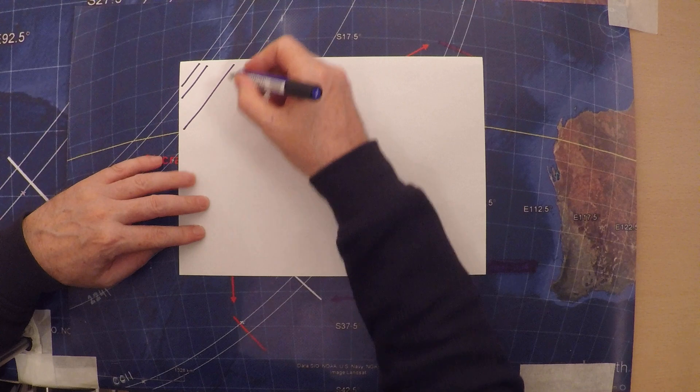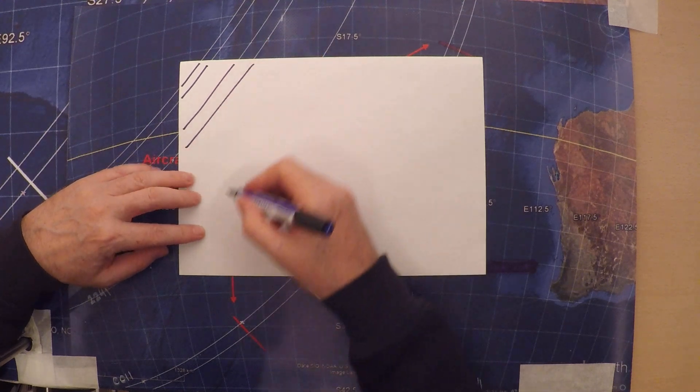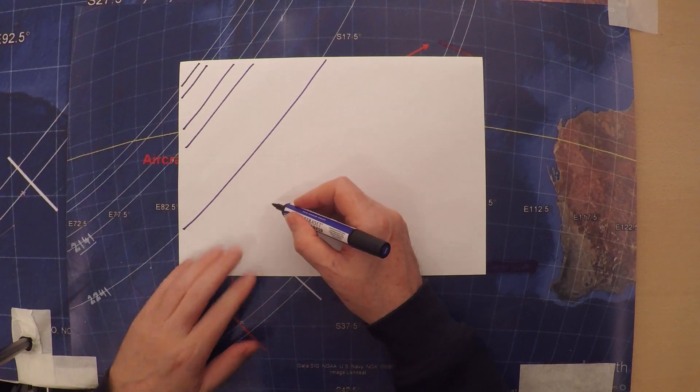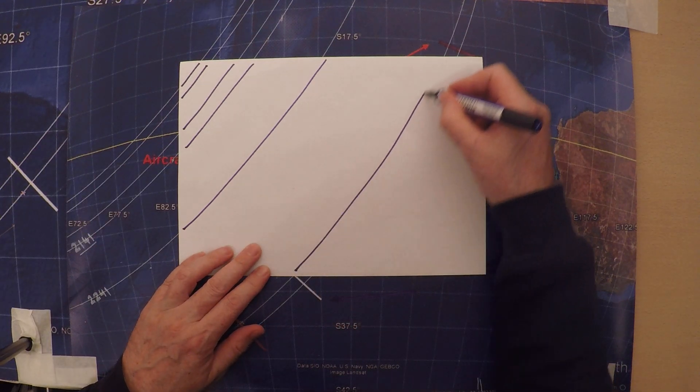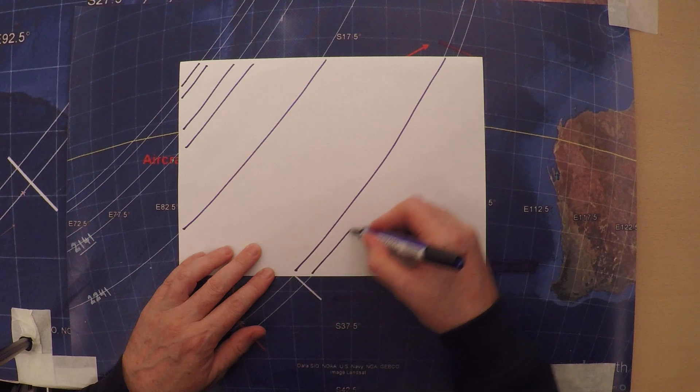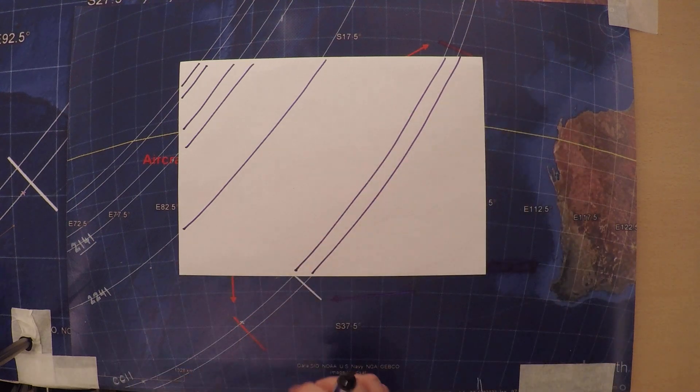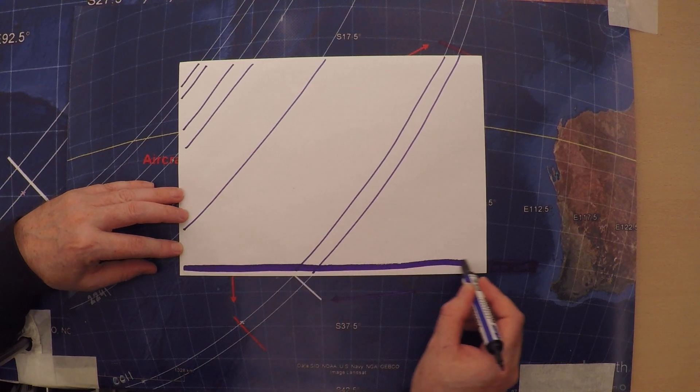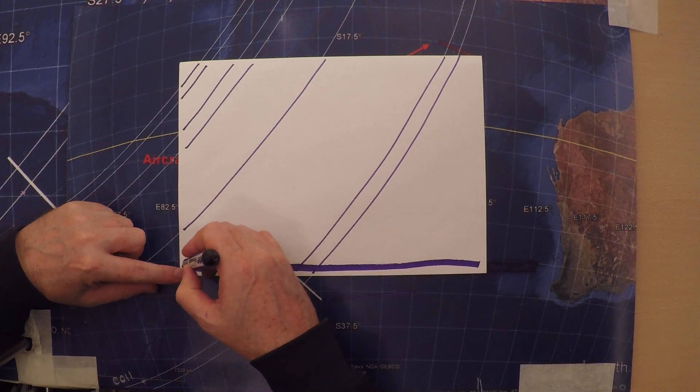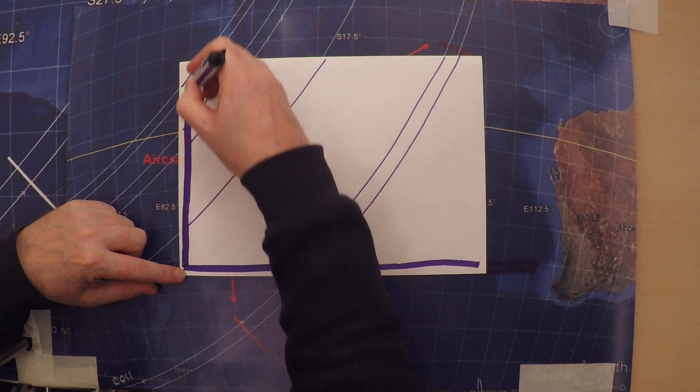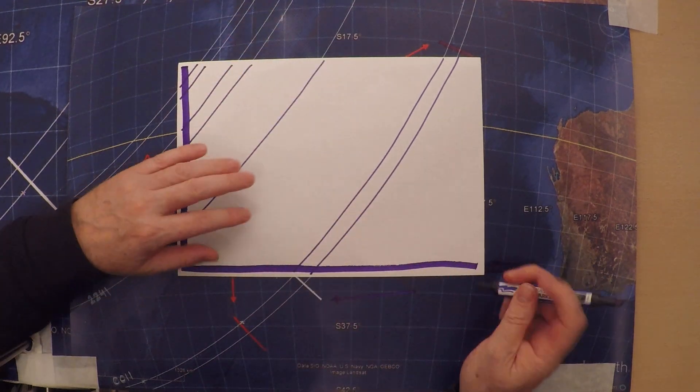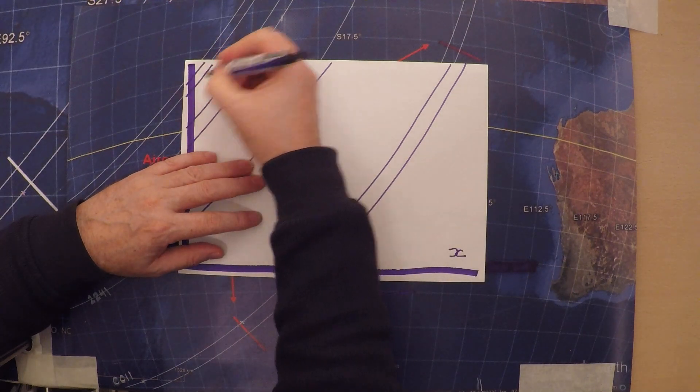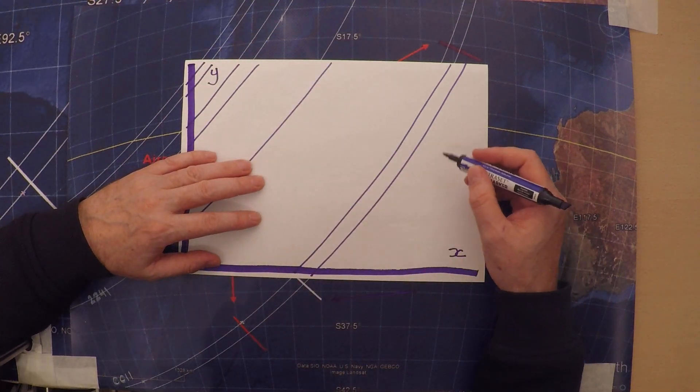Instead of viewing them as lines on a globe, if we view them instead as lines on a graph of x and y, we should be able to make very good progress.